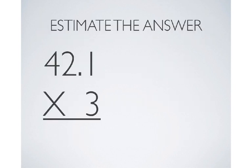In the estimation method, the first thing we want to do is turn our decimal into a whole number that's really easy to work with. In this example, 42 and 1 tenth, 42.1 is really close to 40.